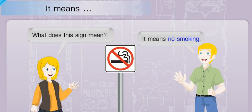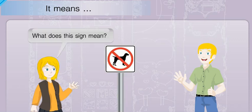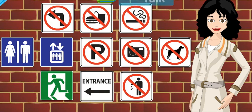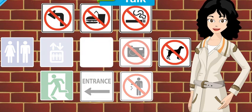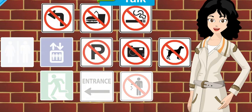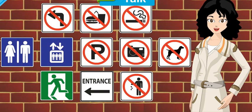Not difficult, right? Let's try another example: What does this sign mean? It means no pets. Now it's time to practice speaking English. Please listen carefully and repeat out loud. Listen to the example sentences carefully and repeat after them. If you miss something or want to hear a sentence again, click the speaker icon.